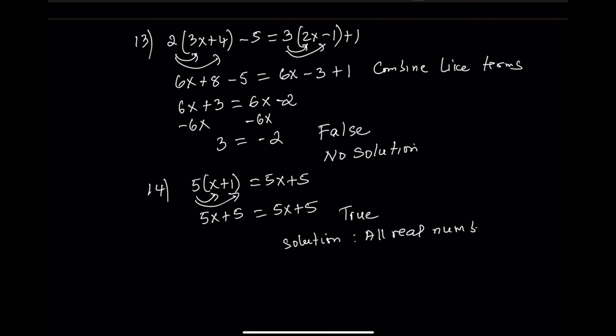And that's it for today's lesson. We worked through a range of multi-step equations with distribution, combining like terms, and identifying no-solution and identity cases. If you learned something new, give this video a thumbs up. Don't forget to subscribe and click the bell so you won't miss our next math walkthrough. Drop your toughest math question in the comments — we might solve it in our next video. Thanks for watching Algebra and Geometry Explained, where math finally makes sense.